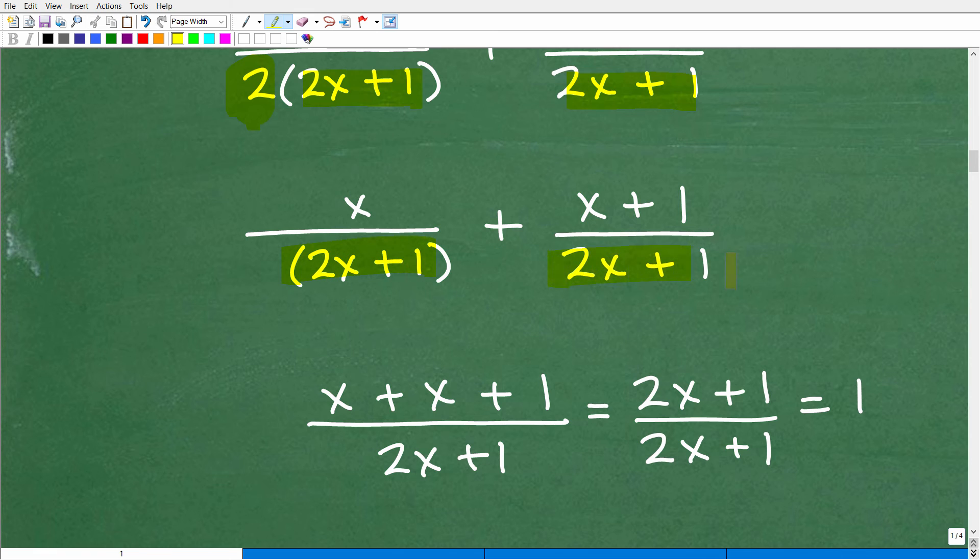Perfectly the same, 2x plus 1, 2x plus 1. So I could just simply add the numerators. That's x plus x plus 1. And over 2x plus 1 right there. Same denominator. So it's 2x plus 1, and x plus x is 2x plus 1. There you go. 2x plus 1 divided by 2x plus 1 is 1. So this is even a nicer way to do this particular problem.